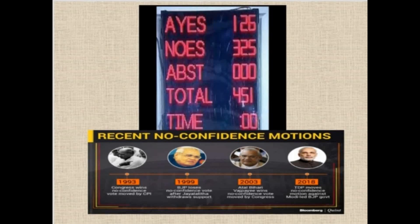This picture illustrates how a no confidence motion operates in the house. You can see a display board showing the number of votes: 126 supporting the motion and 325 against. So the no confidence motion is not passed. The prime ministers pictured faced no confidence motions in recent times. Atal Bihari Vajpayee in 2003 lost the government by just one vote — he did not have majority by one vote, lost the confidence of the house, resigned from office, and the government collapsed, leading to fresh elections.